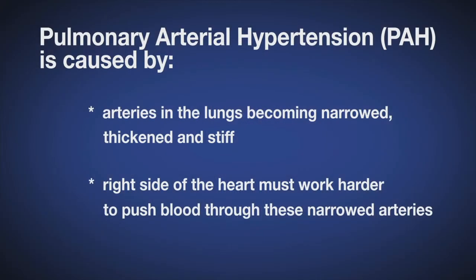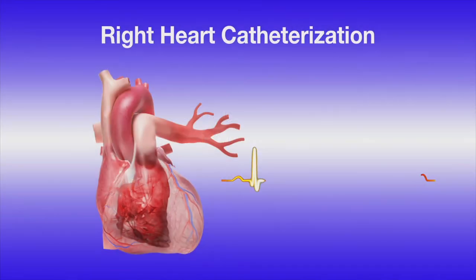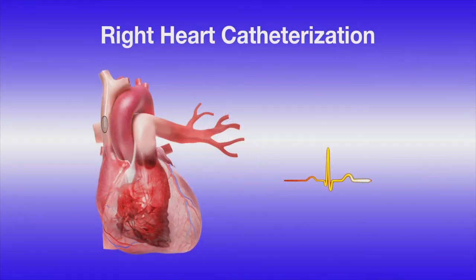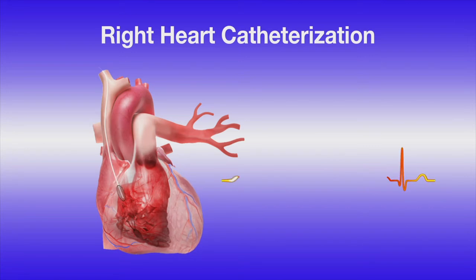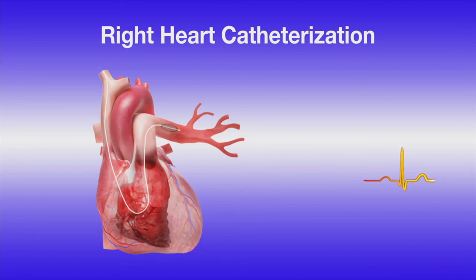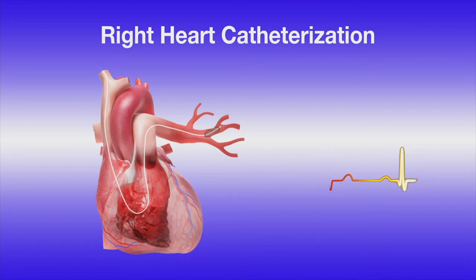The rarest form of pulmonary hypertension that can be seen in connective tissue disease is known as pulmonary arterial hypertension or PAH. It's very important to distinguish PAH from the other types of pulmonary hypertension. Pulmonary arterial hypertension can only be diagnosed by right heart catheterization and, importantly, cannot exist with these other forms of pulmonary hypertension.